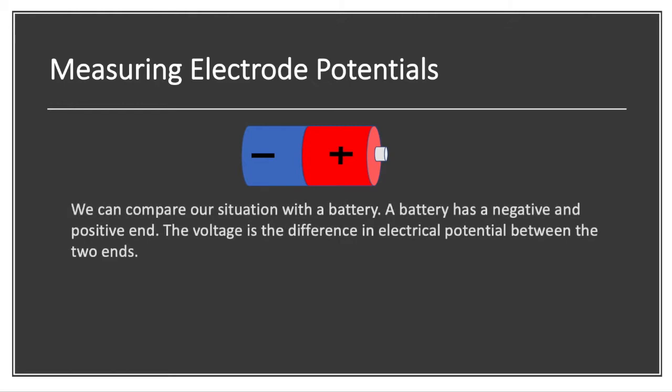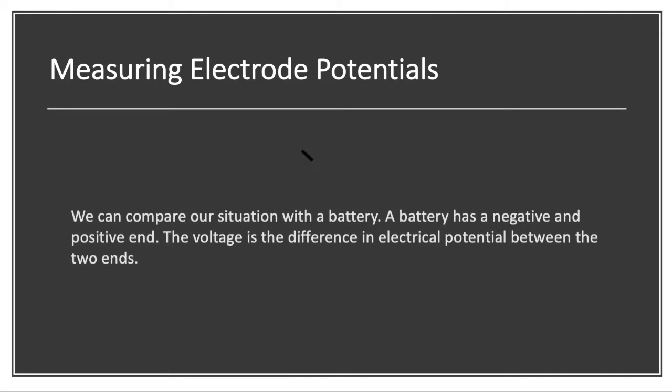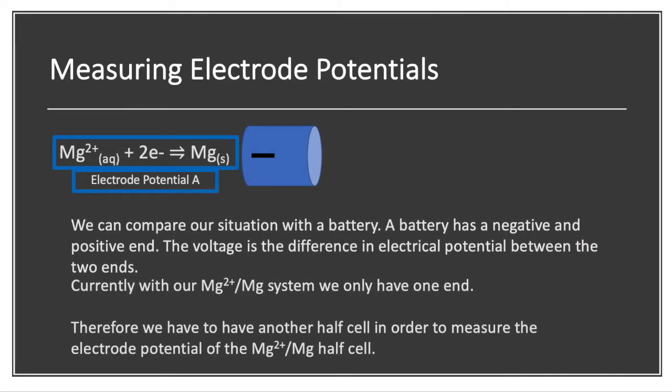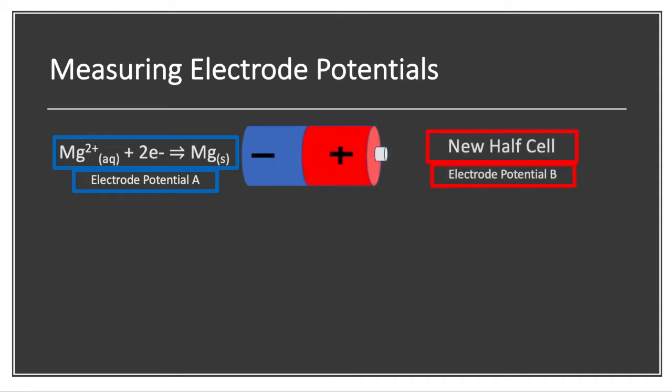So the voltage will be the electrical potential difference between those two half cells that we're going to put together. So we currently have our magnesium part, and we now need to find another half cell to give us our positive part.